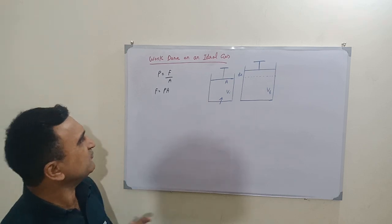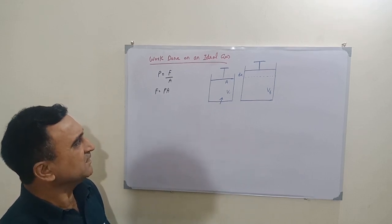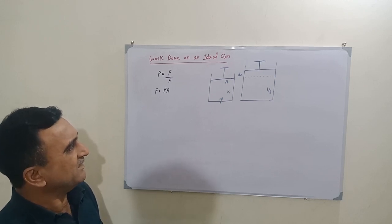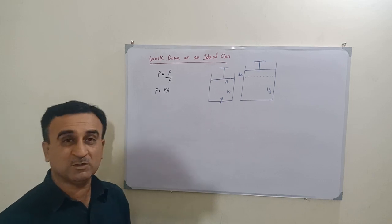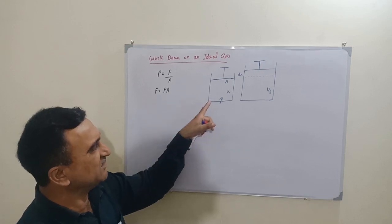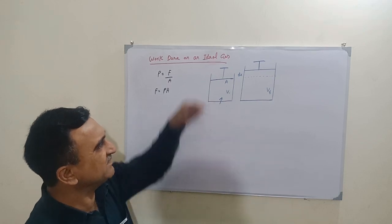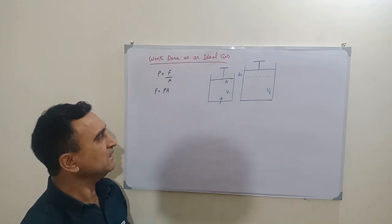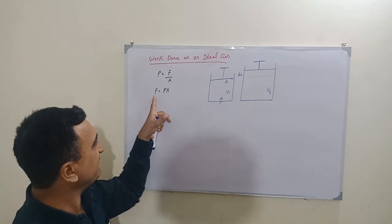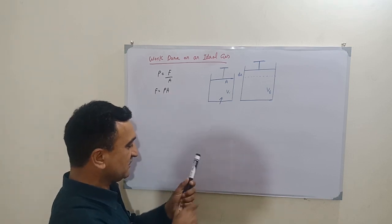We are interested in finding the work done on an ideal gas. We will find the work done on the gas by the external weight. F = PA is the force exerted by the external weight in the downward direction, so the external weight also exerts the same force F = PA in the downward direction. So we can find the work done on the ideal gas.